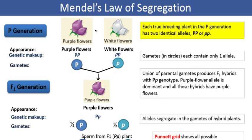The dominant allele is indicated by a capital letter — capital P for purple color. The recessive allele is indicated by a small, usually italicized letter — small p for the white flower color.